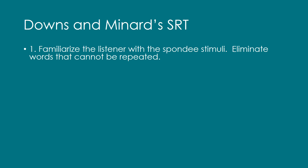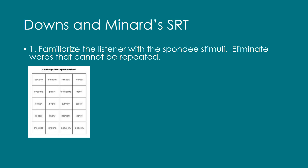The Downs and Menards SRT approach is as follows. Step one: familiarize the listener with spondee stimuli and eliminate words that cannot be repeated. An example list of spondee words can be seen in Figure 4, like cowboy, baseball, donut, etc.